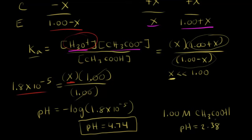Now if you go back to the video on weak acid equilibrium, we calculated the pH for a 1.00 molar solution of acetic acid only, and the pH for that came out to be 2.38. So this is because we didn't have any other acetate anions present. The pH is higher for this situation where we have two sources for the acetate ion: the ionization of acetic acid, and also the addition of sodium acetate.